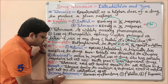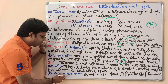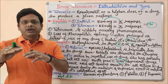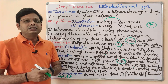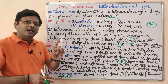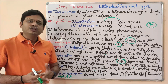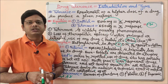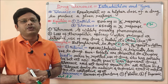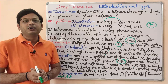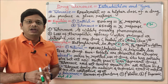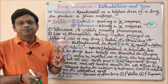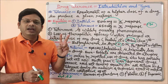Cross tolerance, as the name suggests, means that taking one drug can affect tolerance to another drug of the same category. If someone is in a chronic alcoholism condition and needs general anesthesia, a higher dose will be required because they have already developed tolerance due to alcohol use. Cross tolerance means one drug can affect the action of another drug in the same category.